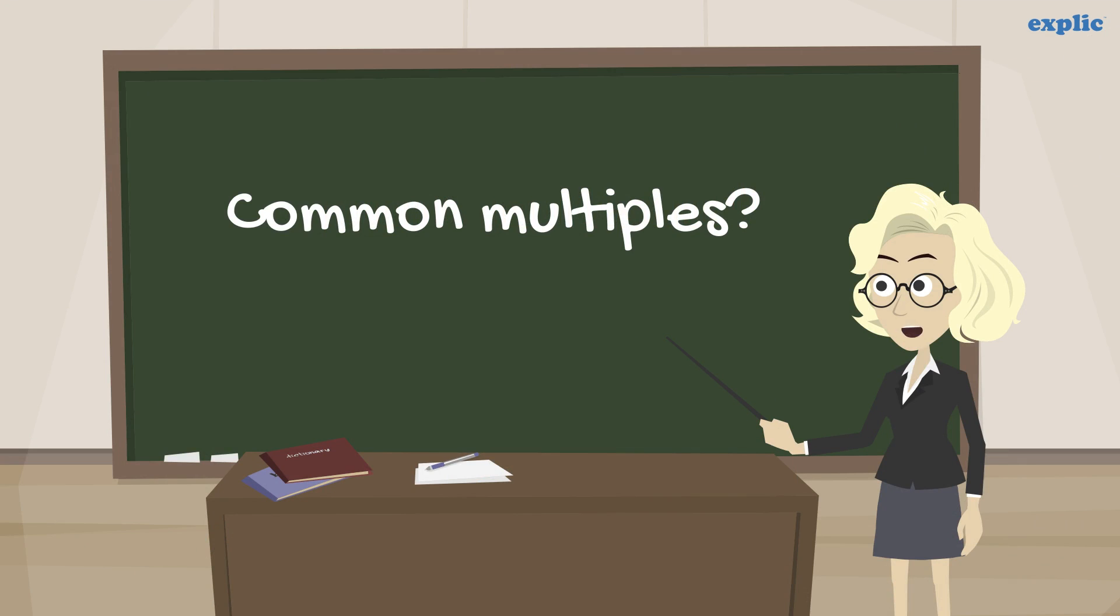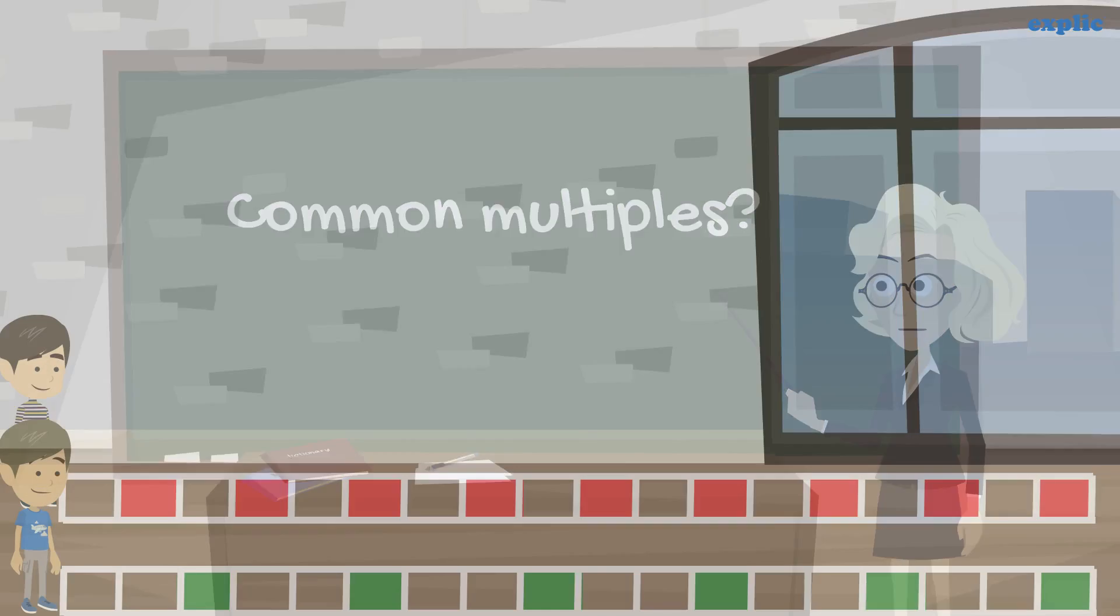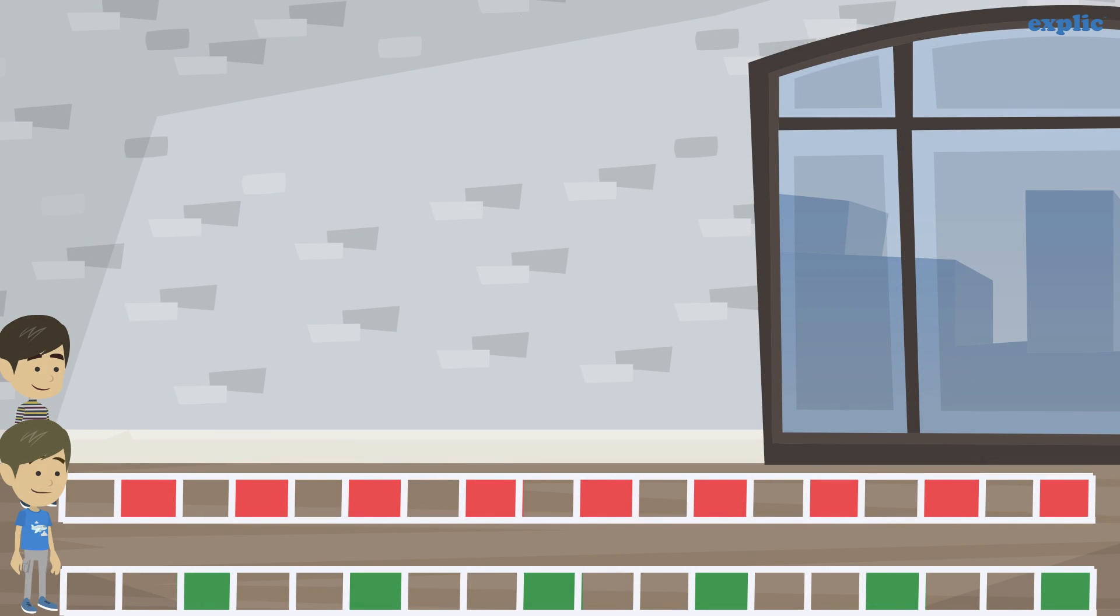Let's understand what common multiples are with the help of an example. Sam and Sid were playing hopscotch. Sam can only hop on every second square, marked in red.